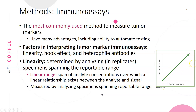You want the concentration-signal relationship to be a straight line. If it starts deviating — flattening out — then you have lost linearity. You can only report concentrations from the lowest to the highest concentration where the relationship remains linear and predictable. Linearity is determined by analyzing specimens that span the reportable range, from very low to very high concentration.